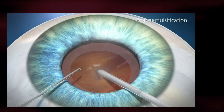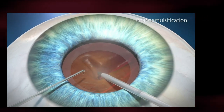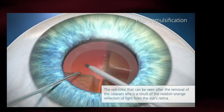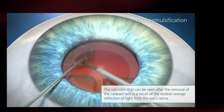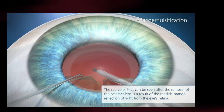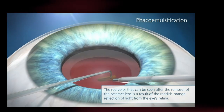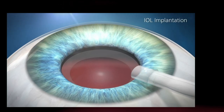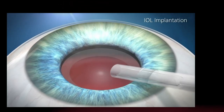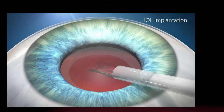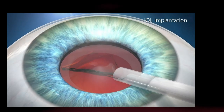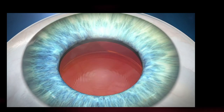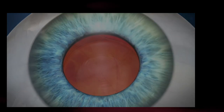The red color that can be seen after the removal of the cataract lens is a result of the reddish-orange reflection of light from the eye's retina. Finally, the clear artificial lens is implanted using an injector. The intraocular lens unfolds gently into the capsular bag, replacing the removed natural lens. The implanted intraocular lens stays fixated and centered in the eye and is neither visible nor perceptible.